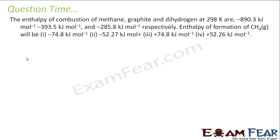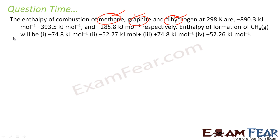The enthalpy of combustion of methane, graphite, and dihydrogen at 298 K are −890.3 kJ/mol, −393.5 kJ/mol, and −285.5 kJ/mol respectively. We need to find the enthalpy of formation of CH4. The target reaction is: C(graphite) + 2H2(g) → CH4(g).